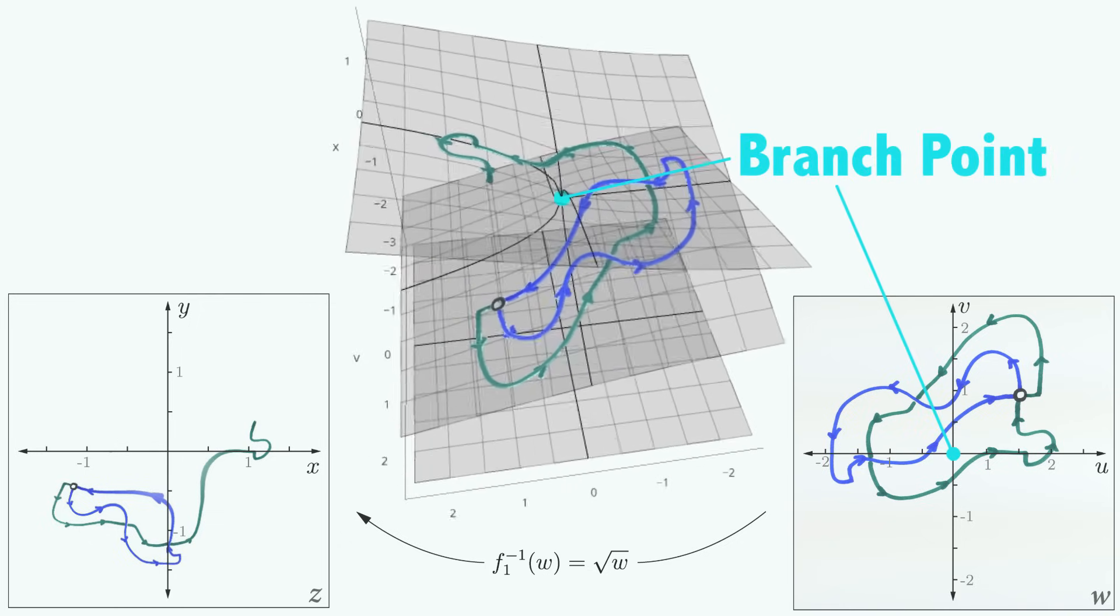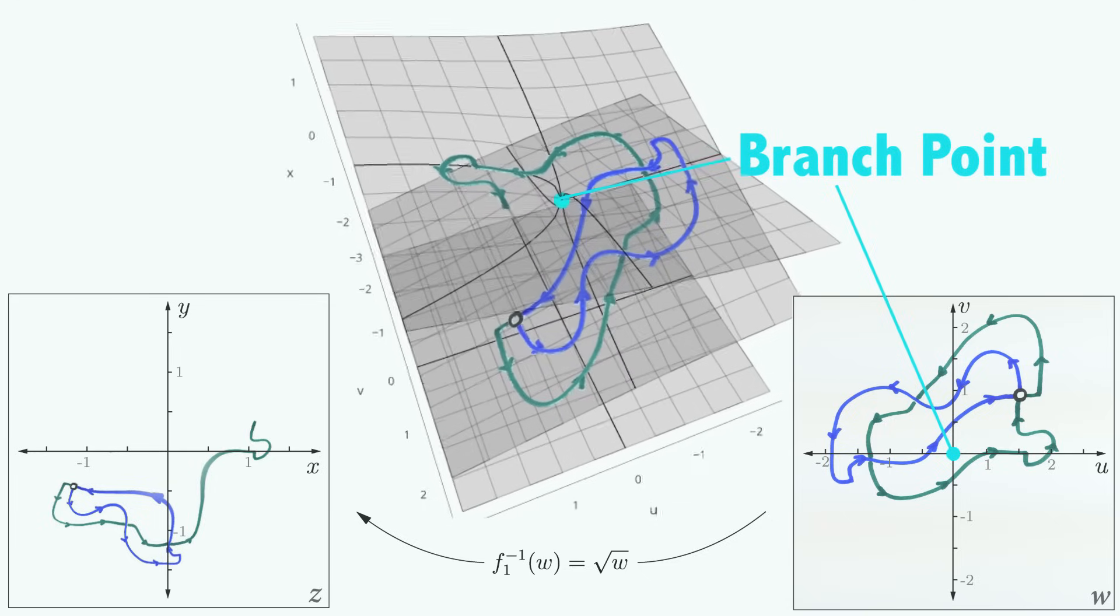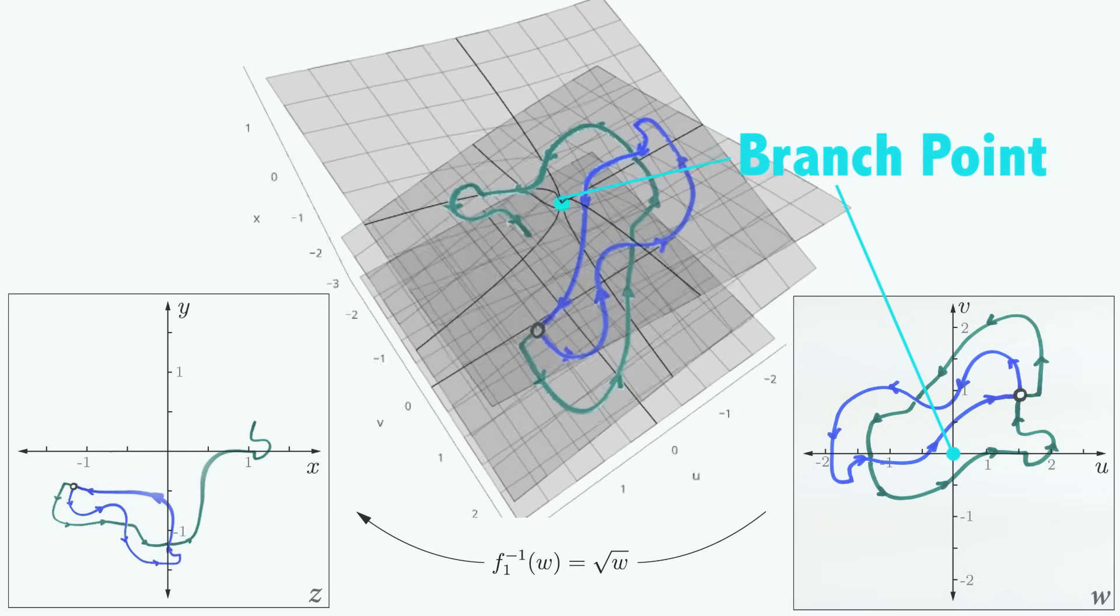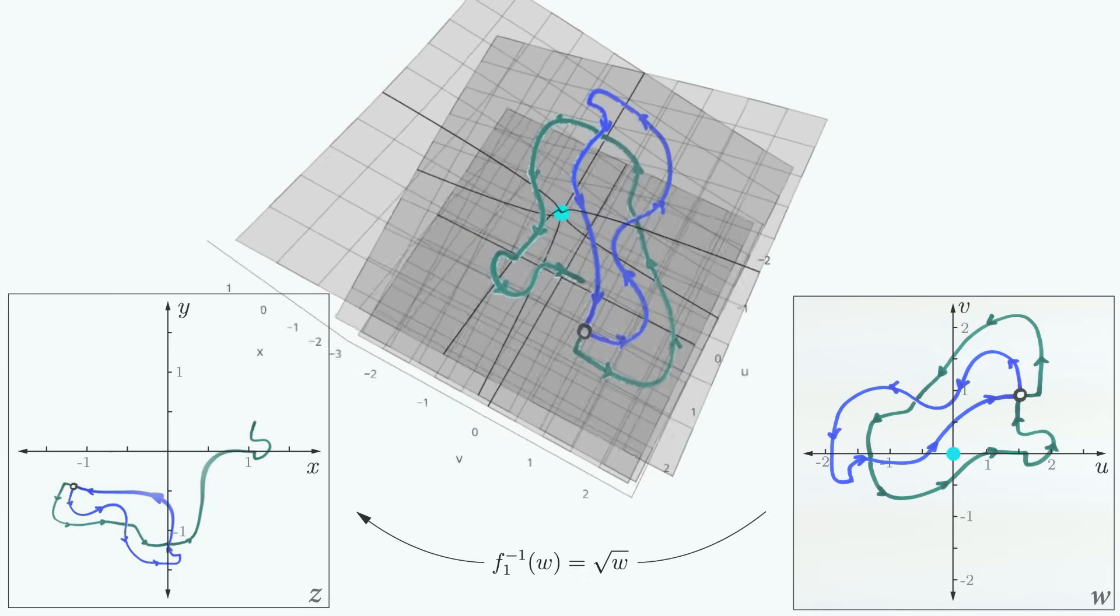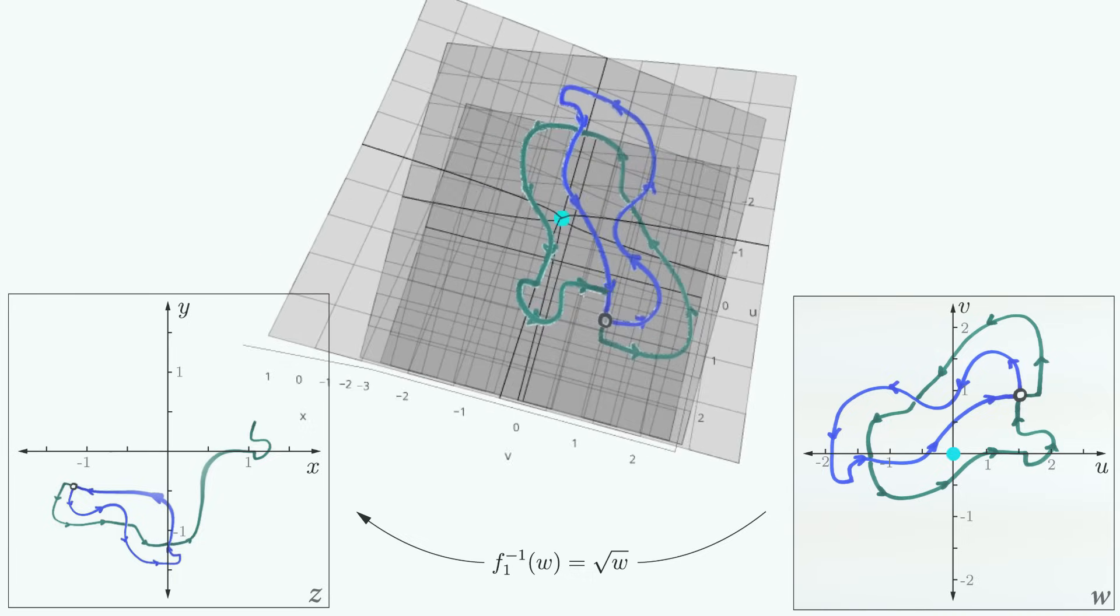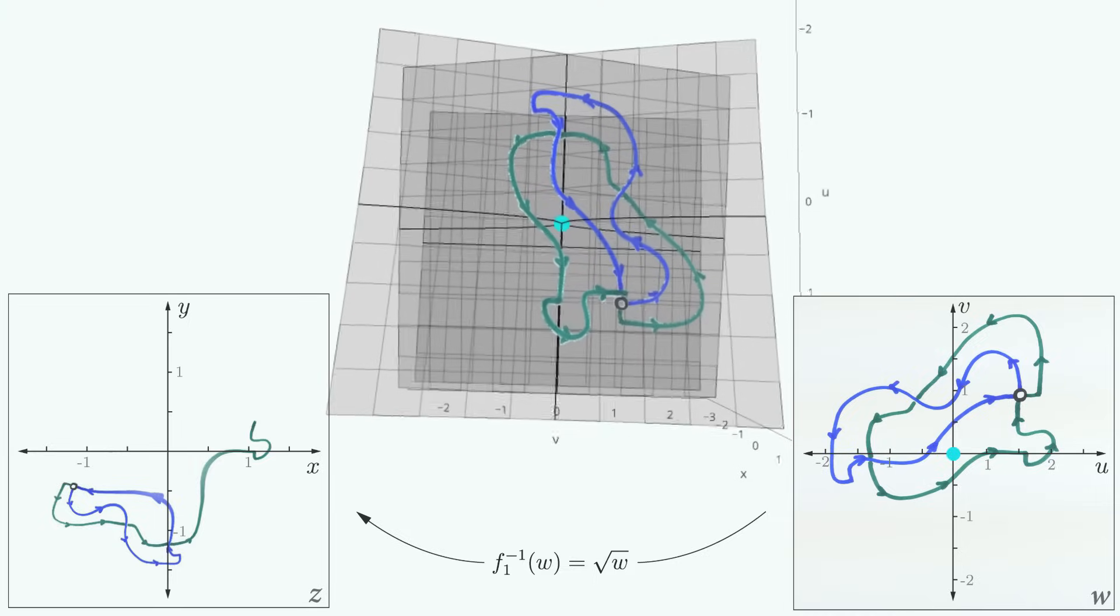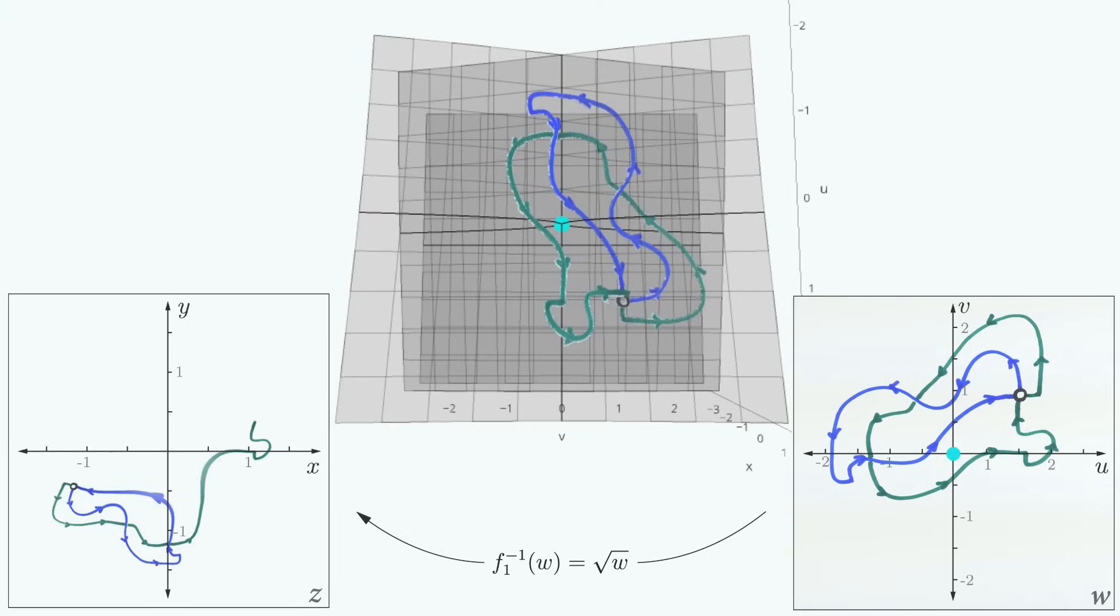Branch points occur wherever the two branches of our function have the same exact value, and can tell us a great deal about how our complex function behaves. For us, this is the point W equals zero. So our Riemann surface not only fixes the troubles we ran into earlier, but beautifully explains the strange path behavior we saw. And this is just the beginning. Riemann surfaces are a huge part of modern mathematics, and there's way more to say than we have time for here.